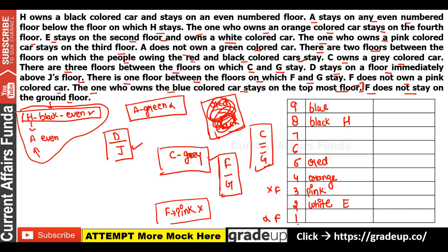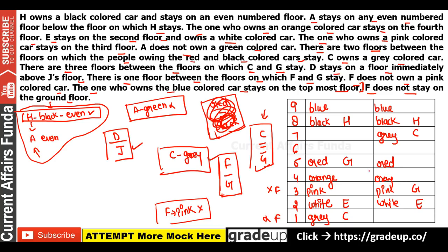F is not on floor 1. D and J will come together since D is immediately above J. For C with grey, there's a related point: C and G have a gap of 3 floors. So if C is at a position, G comes 3 floors away. Only two possibilities remain for the C-G pairing. We eliminate the invalid ones based on other constraints.